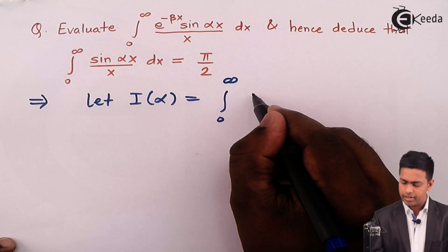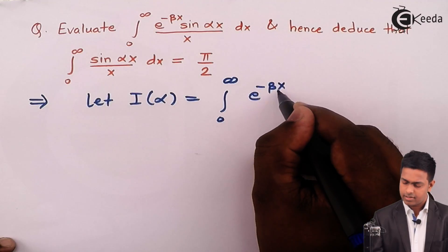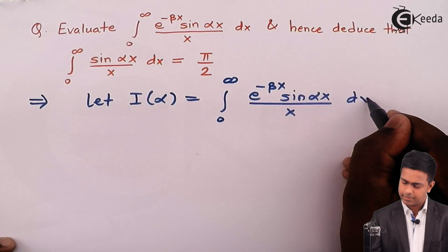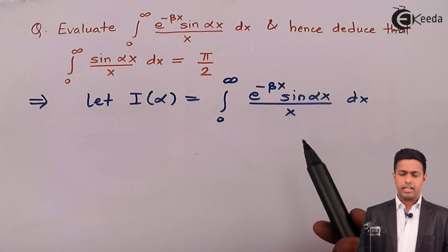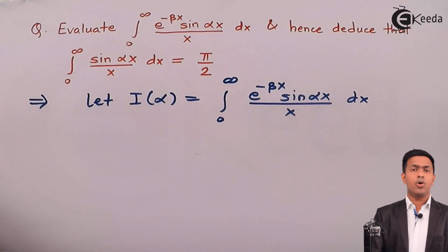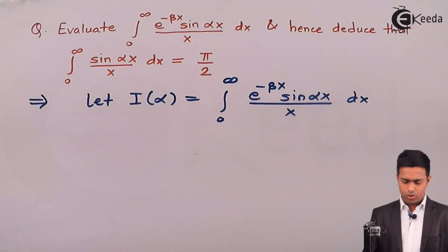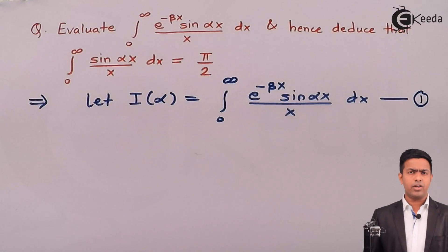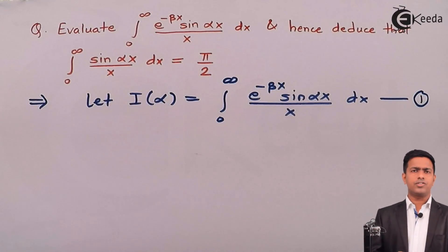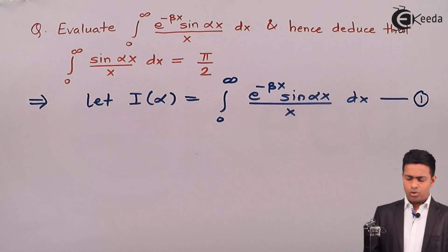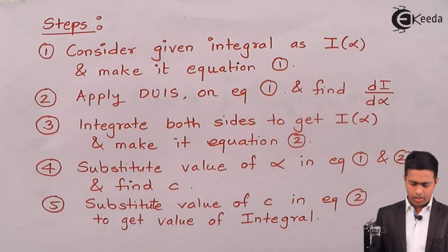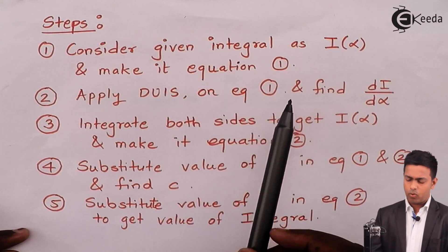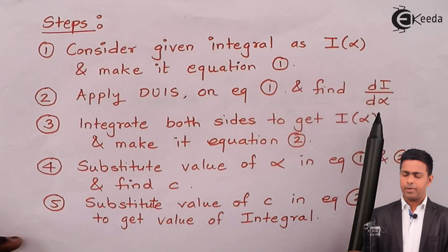Let this integral be I(alpha), which is the integration from 0 to infinity of e raised to minus beta x times sin(alpha x) upon x dx. We will solve this integration by the rule of DUIS. We'll call this equation number one. To get the value by DUIS we follow certain steps — step one is now done, and next we apply DUIS on equation one.